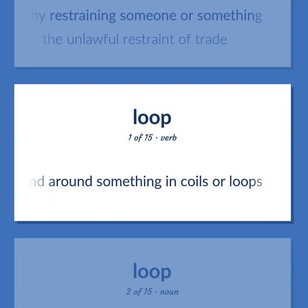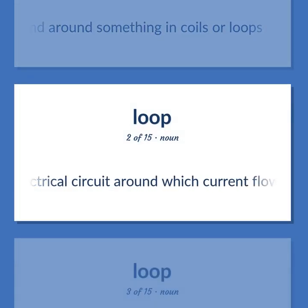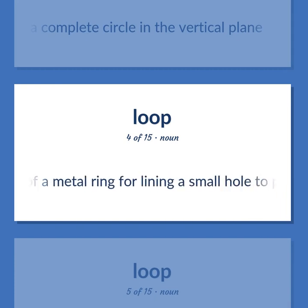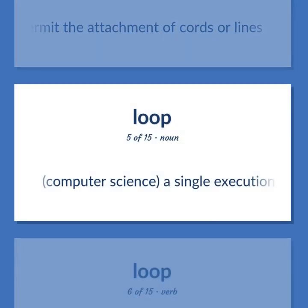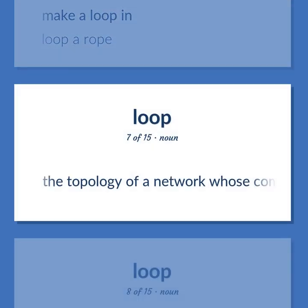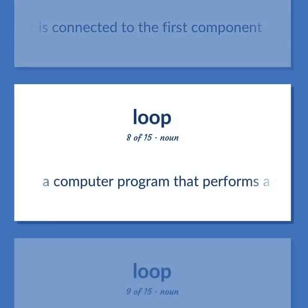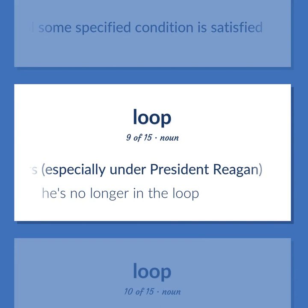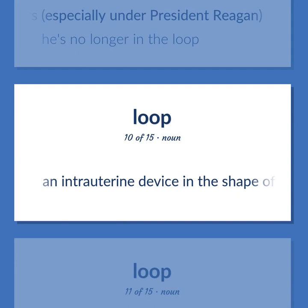Wind around something in coils or loops. A complete electrical circuit around which current flows or a signal circulates. A flight maneuver: aircraft flies a complete circle in the vertical plane. Fastener consisting of a metal ring for lining a small hole to permit the attachment of cords or lines. Computer science: a single execution of a set of instructions that are to be repeated. Make a loop in. Loop a rope. The topology of a network whose components are serially connected such that the last component is connected to the first. A computer program that performs a series of instructions repeatedly until some specified condition is satisfied. An inner circle of advisors, especially under President Reagan. He's no longer in the loop. An intrauterine device in the shape of a loop.